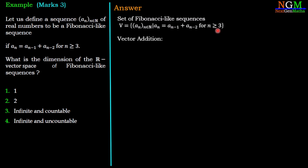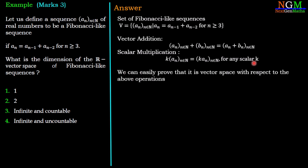We define operation vector addition: (aₙ) + (bₙ) = (aₙ + bₙ) for n ∈ ℕ. Scalar multiplication: k(aₙ) = (kaₙ) for any scalar k. We can easily prove that the set V is a vector space with respect to the above operations. We are not going into the detail but you can do this by yourself.